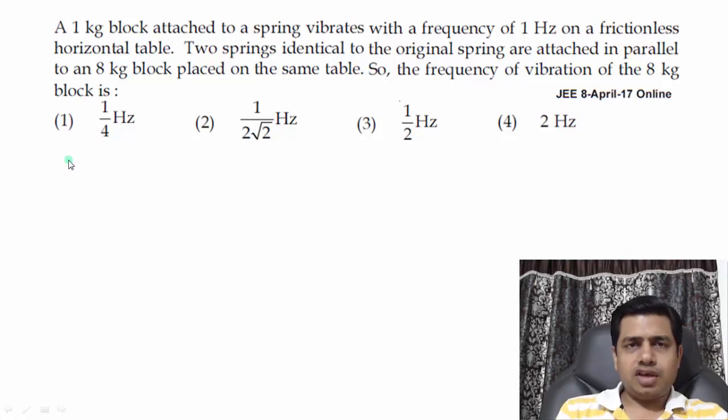The question is: a 1 kg block attached to a spring vibrates with a frequency of 1 Hz on a frictionless horizontal table. Two springs identical to the original spring are attached in parallel to an 8 kg block placed on the same table. So the frequency of vibration of 8 kg block is? For a spring-mass system that does SHM, the frequency is 1/(2π)√(k/m).